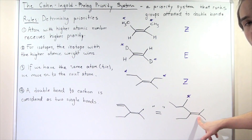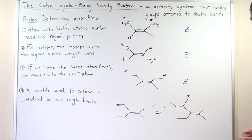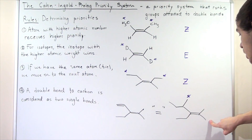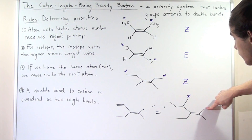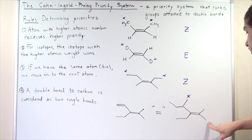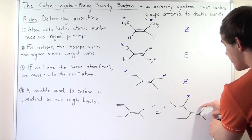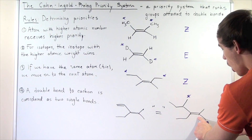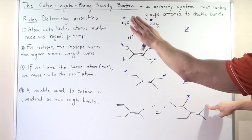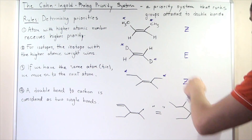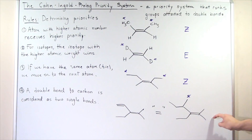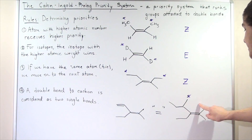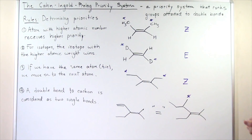On the other side of the carbon, we have two identical methyl groups — carbon and carbon — so no one wins. For this carbon, the Cahn-Ingold-Prelog priority system does not work; it yields two groups with the exact same priority.